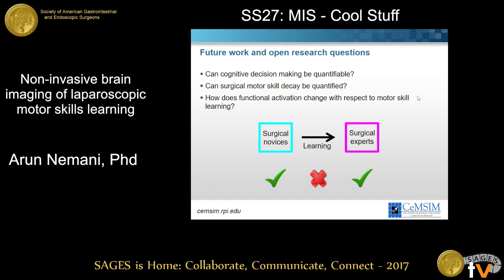So where do we go from here? We've really covered the two extremes — novices and experts — but what about everything in between? That's a follow-up study we're doing right now, taking medical students, training them on a basic FLS task, and studying the relative change of cortical activation as they progress from novice to expert. But what about other metrics? Motor skill alone isn't all that defines a good surgeon — what about decision-making and stress physiology? We believe all of these concepts can be measured in real time with brain activation, so there's a lot of future work to be done.